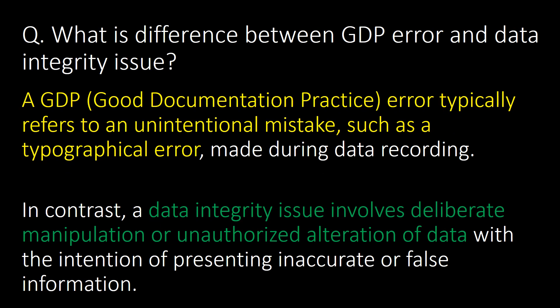This is a very important question: what is the difference between a GDP error and a data integrity issue? A GDP, or good documentation practice, error typically refers to an unintentional mistake, such as a typographical error made during data recording. In contrast, a data integrity issue involves deliberate or intentional manipulation or unauthorized alteration of data with the intention of presenting inaccurate or false information.